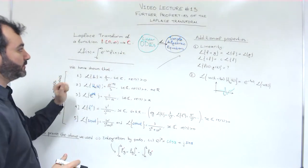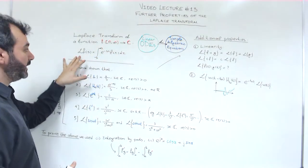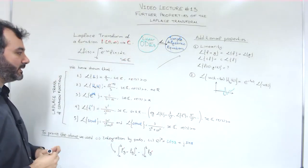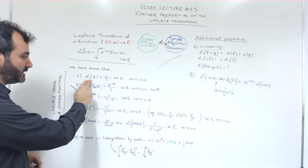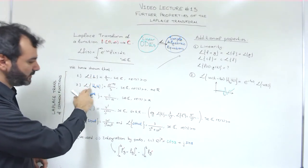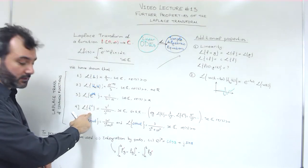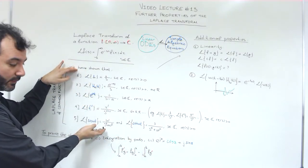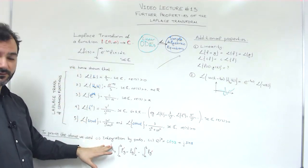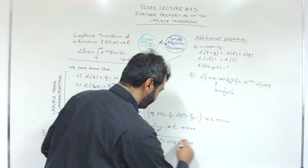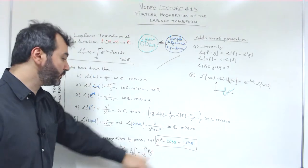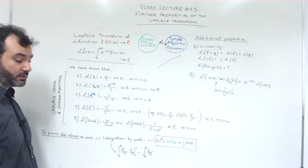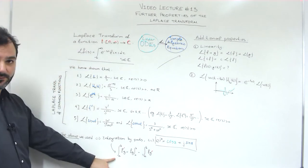First, we introduced the Laplace transform. For functions in the time domain, we defined the Laplace transform to be a function of a complex variable s. Examples include: the Laplace transform of the constant function equals 1, the Laplace transform of the Heaviside exponential function, powers t to the nu, sines and cosines. We proved all these using integration by parts very often, as well as a useful trick to prove these Laplace transforms using the Laplace transform of the exponential function.